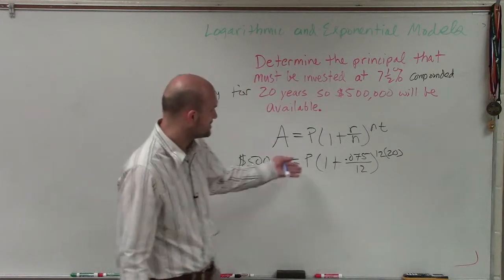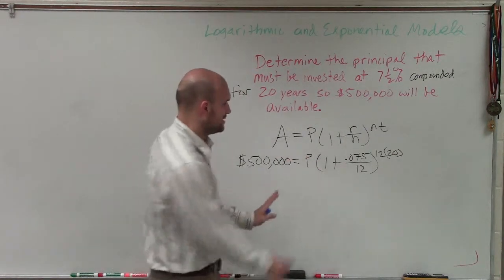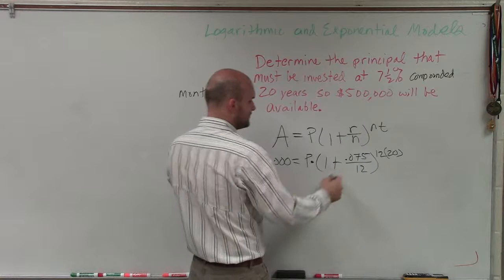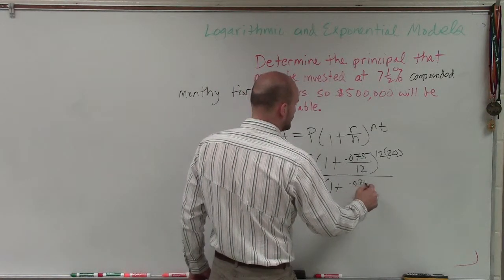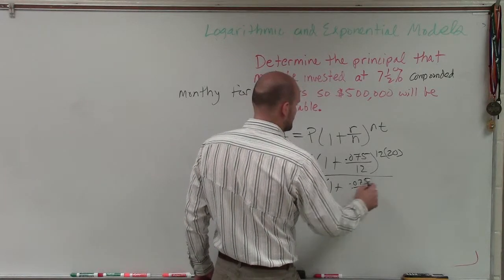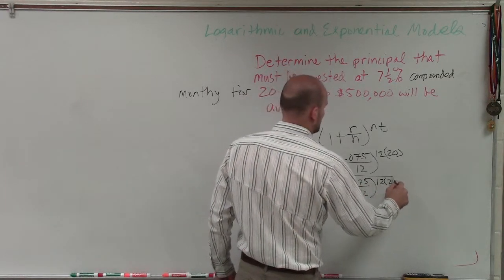All right, so then what we're simply trying to do is solve for P. So this is P times all of this. So what I can simply do is just divide this whole answer, or this whole product, on both sides.